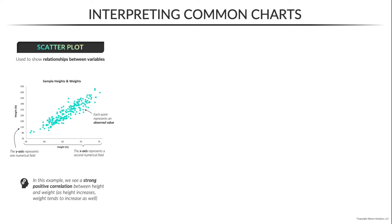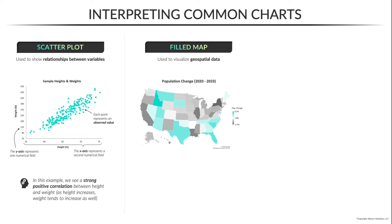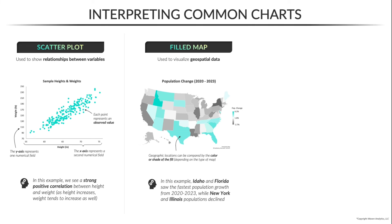Next up, we have the filled map, which as you might expect is used to visualize geospatial data. Here we see a map of U.S. states where the color or fill of each state represents the population change between 2020 and 2023. States with a large population increase are shown in blue, and states with a large population decrease are shown in dark gray. Interpreting this one, we see that Idaho and Florida were among the fastest-growing states during this period, while New York and Illinois, among others, saw populations decline.